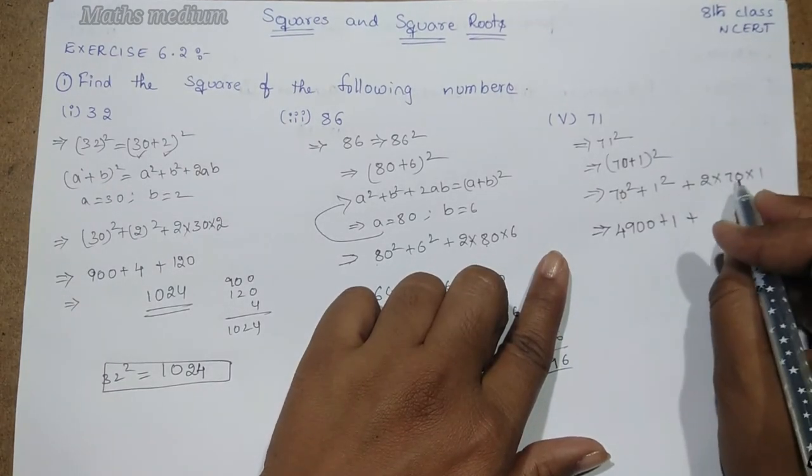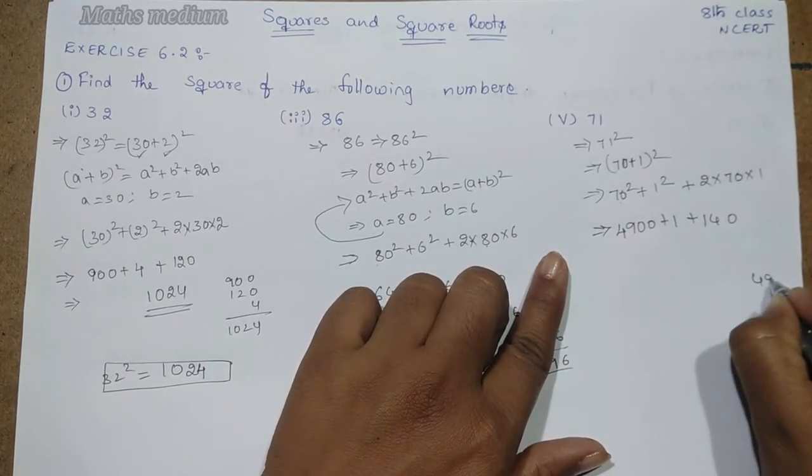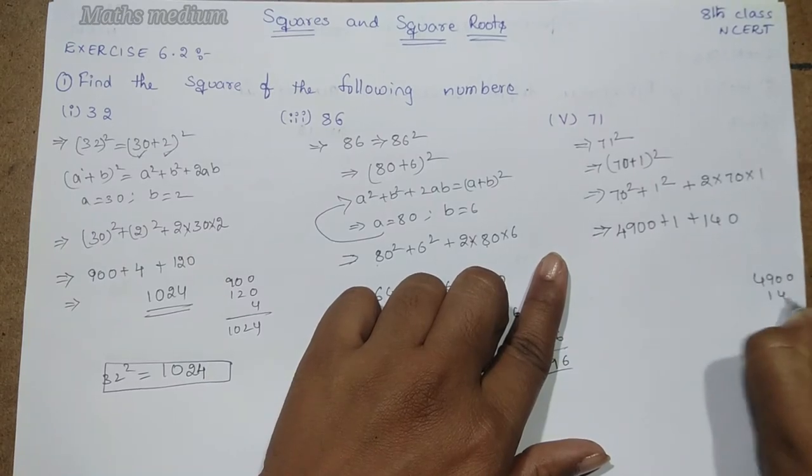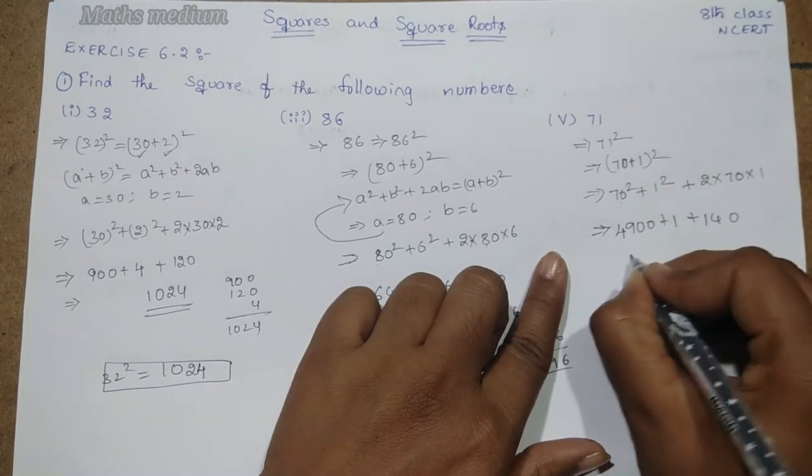2 into 70 is 140, times 1 is 140. Now, by adding 4900, 140, and 1. 1, 4, 10, 5.